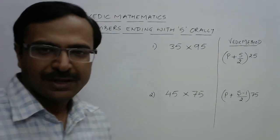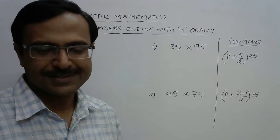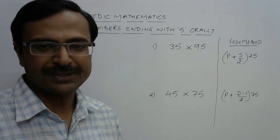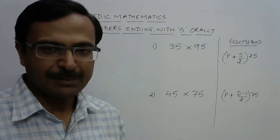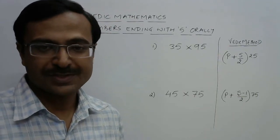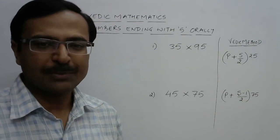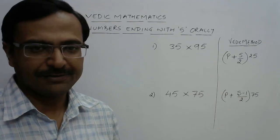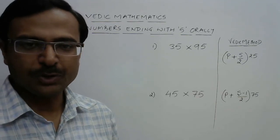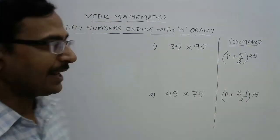Hello dear friends, Vedic mathematics has a lot of shortcuts and useful methods for making you a mathematics expert, carrying out calculations which take a lot of time within seconds. So today I'm going to discuss one more such Vedic mathematics trick through which you will be able to multiply numbers ending with 5 orally, like I have written two examples here: 35 × 95 and 45 × 75.